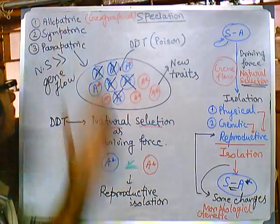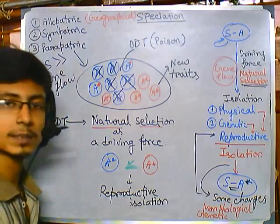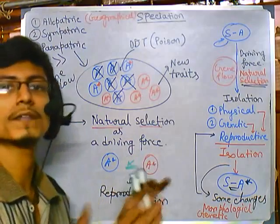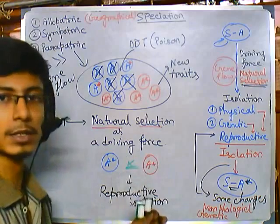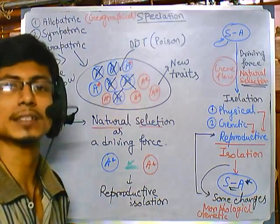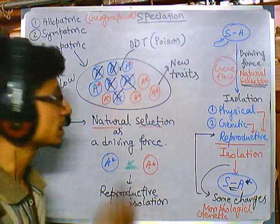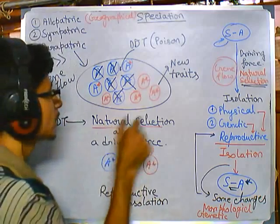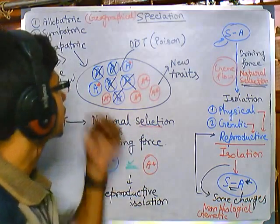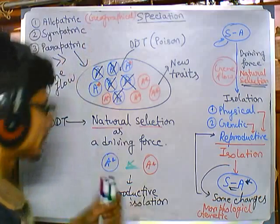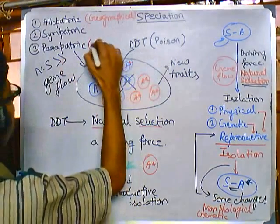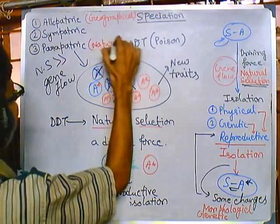Also, in allopatric speciation, the process begins with geographical or physical isolation. In parapatric speciation, there is no geographical isolation — instead, the new species emerges due to natural selection acting as the driving force. That is the key difference between allopatric and parapatric speciation.